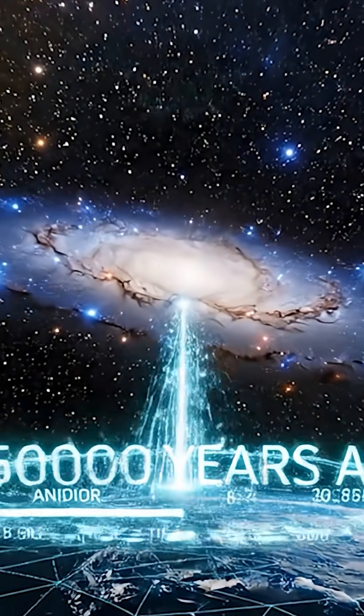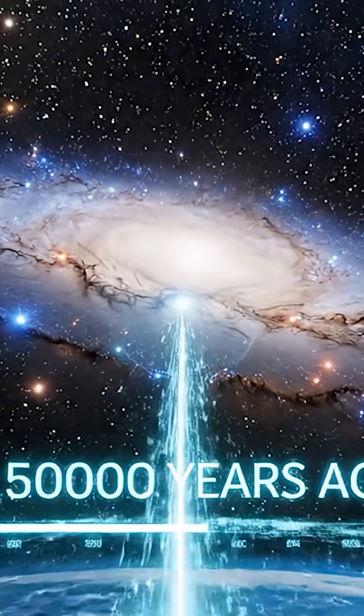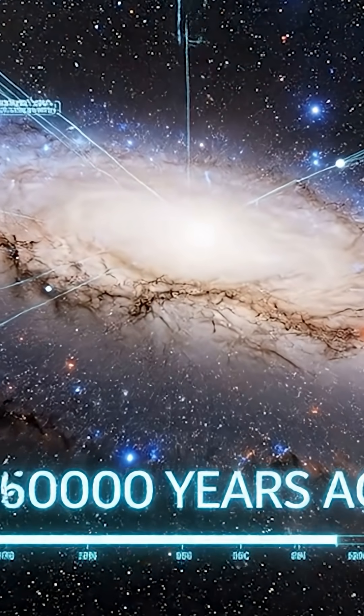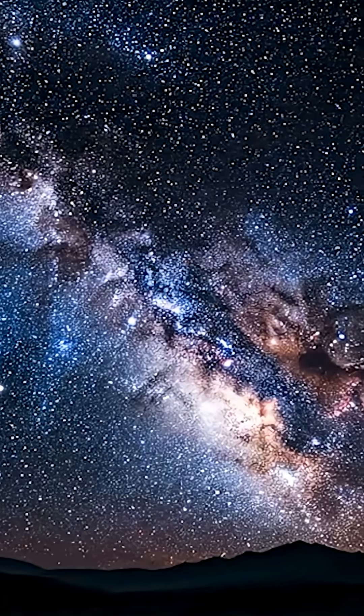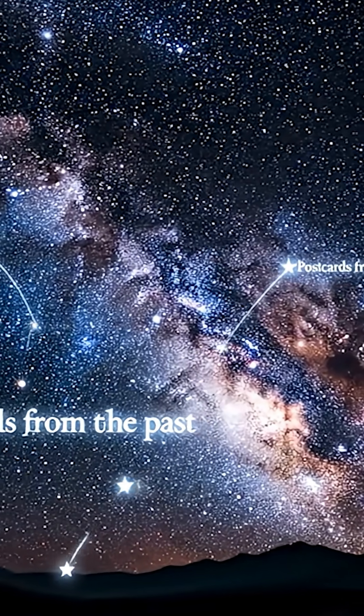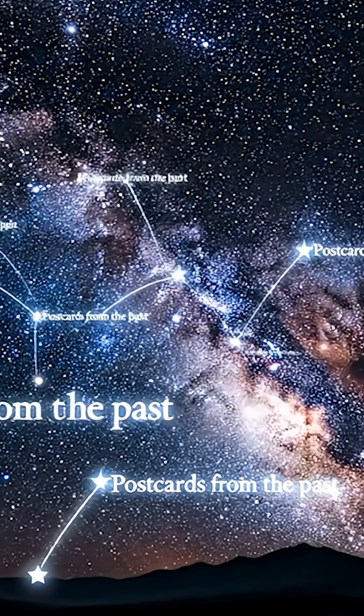When you look at the Andromeda galaxy through a telescope, you are not seeing it as it is today. You're seeing light that began its journey 2.5 million years ago, roughly when early humans were shaping the first stone tools.